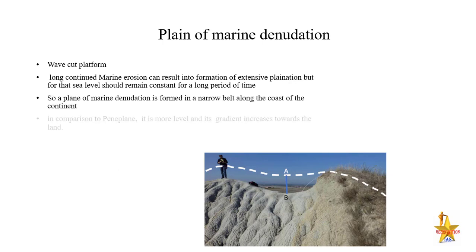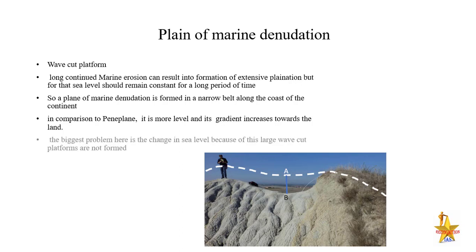Compared to Peneplain, marine denudation planes are more level because material is sufficiently available and the maritime climate provides stability with little temperature variation. The structures found here are stable structures. However, everything depends on whether the sea level is stable or not — if not stable, you will not find any such kind of plane in marine areas.